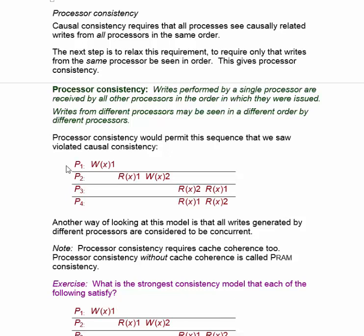Processor consistency would permit the sequence that we saw violated causal consistency. The reason is that the two writes are done by different processors, so processor consistency makes no guarantee about how they're seen in the system. Processor 3 happens to see the write by processor 2 before processor 1's write, and processor 4 sees them in the opposite order. Another way of looking at this model is that all writes generated by different processors are considered to be concurrent — they could happen in whatever order without violating the model.